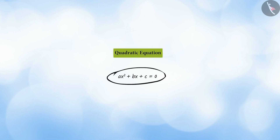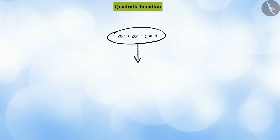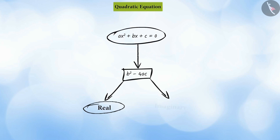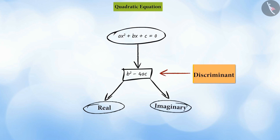You have seen that, for any quadratic equation, b squared minus 4ac determines whether the roots of the equation are real or imaginary. Therefore, it is called the discriminant.